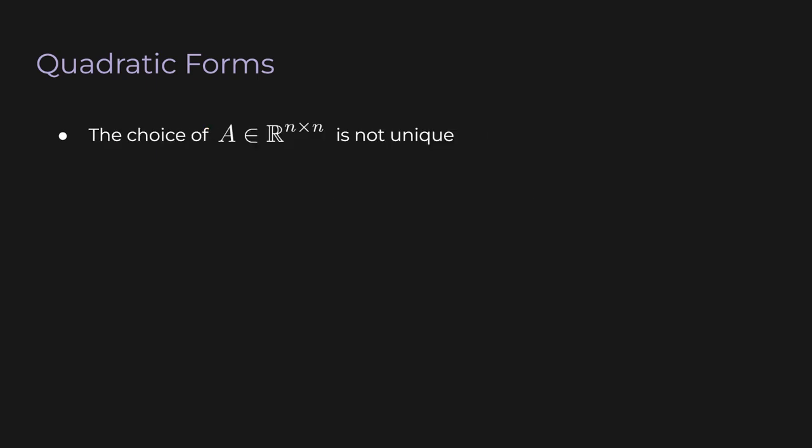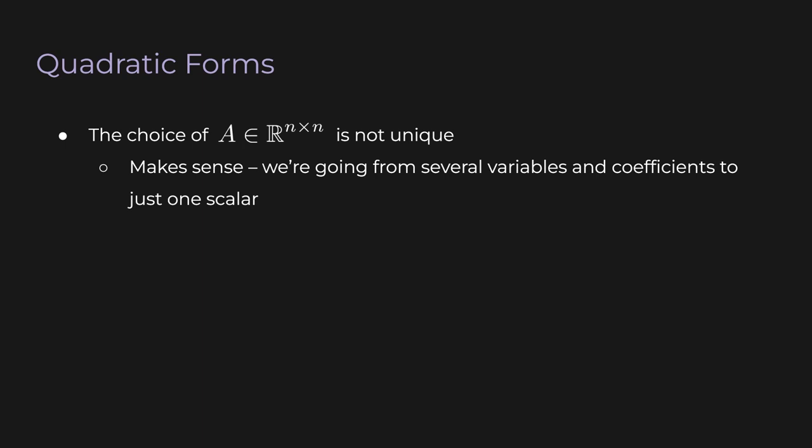One immediate consequence of this definition is that the particular choice of A for a given quadratic form is not unique. This makes sense because the function takes a vector — several variables — and maps it to a scalar, just one variable. There's going to be a lot of redundancy.